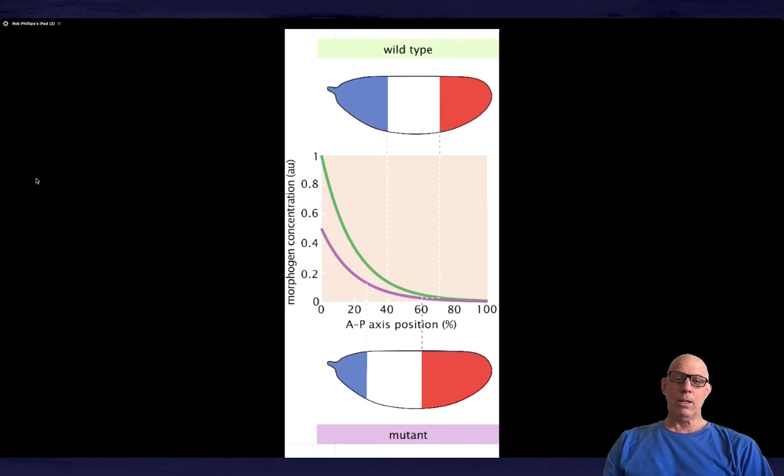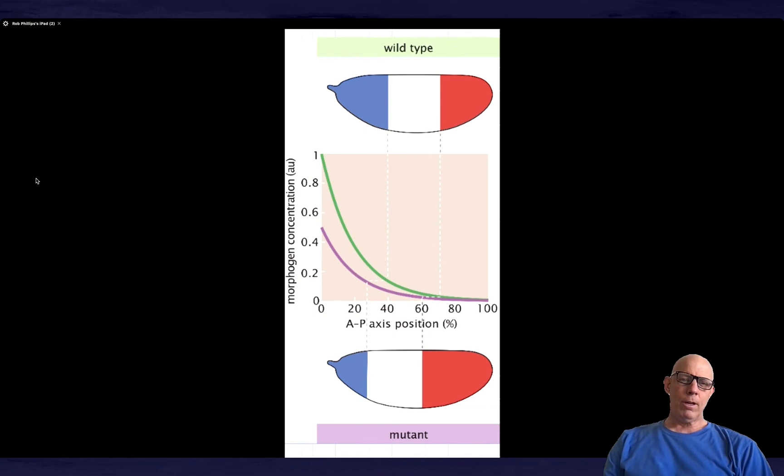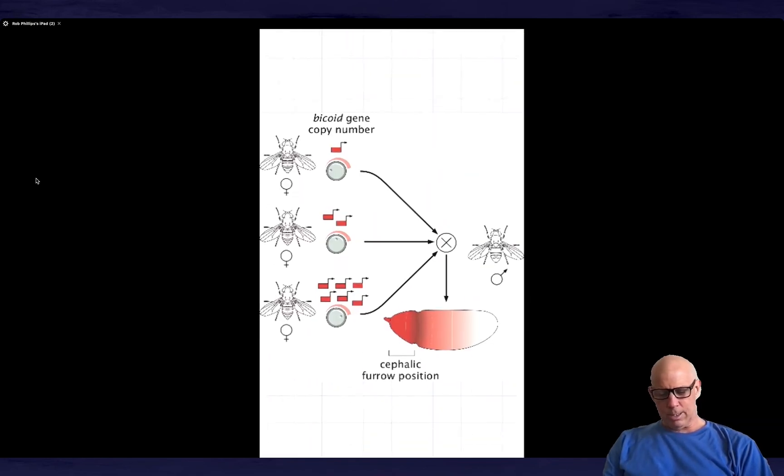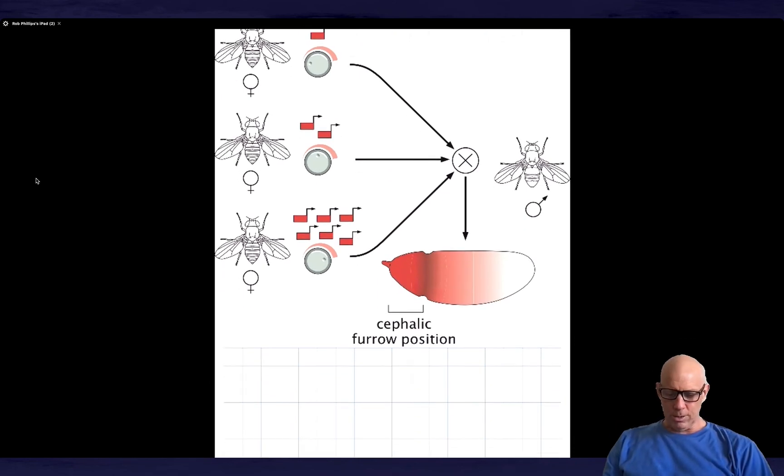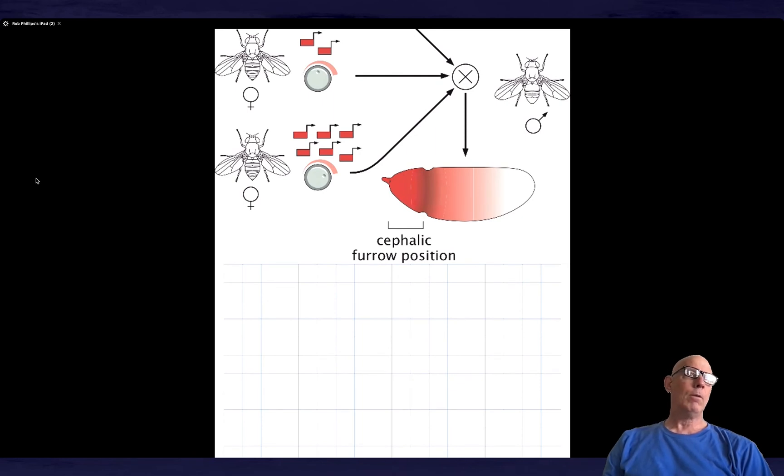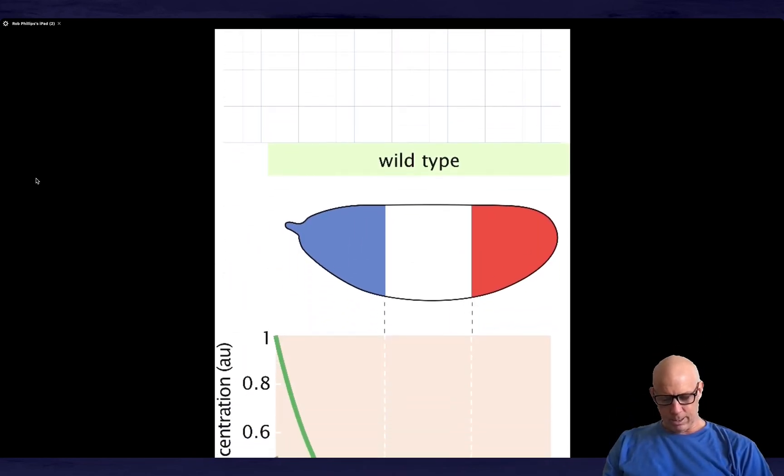So in this case, it's a half. And so that shifts the pattern to the left. And I wanted to just tell you that some experiments are possible using the trickery and beauty of the molecular biology that's available in the fly, doing various crosses. And so you can tune the gene dosage. And then in Gregor's group, I think they did all the way from like 0.5 to 6 as the range that they considered.